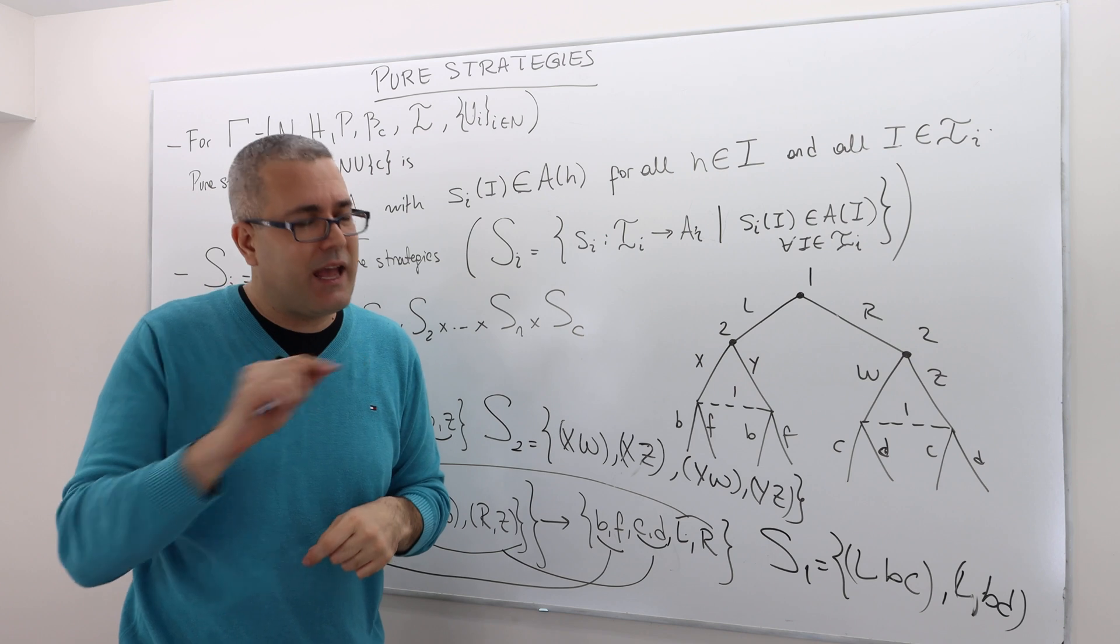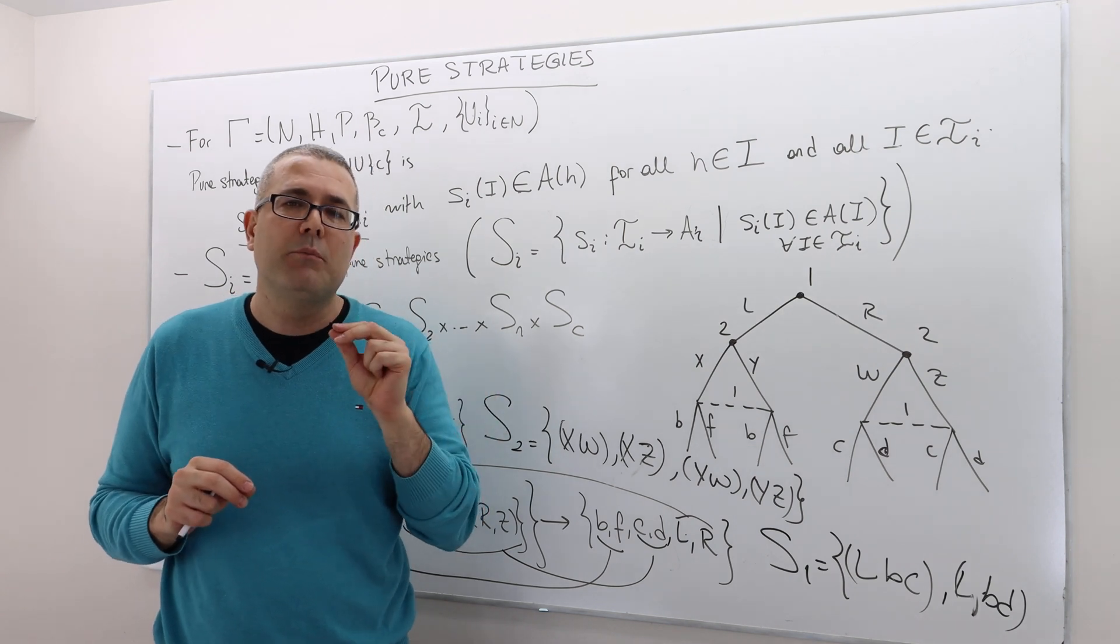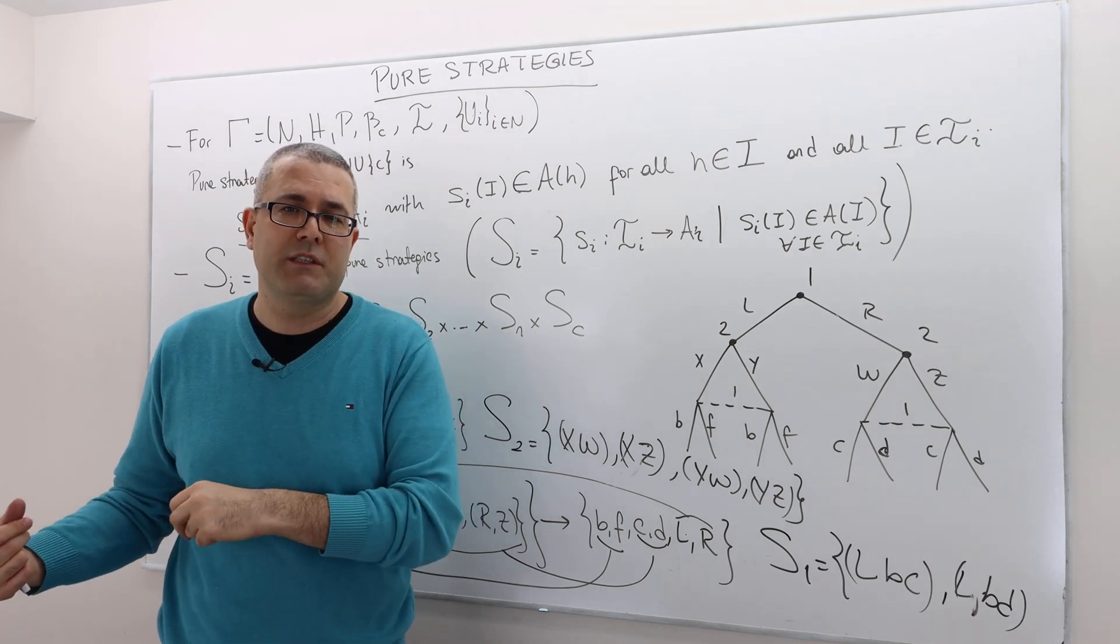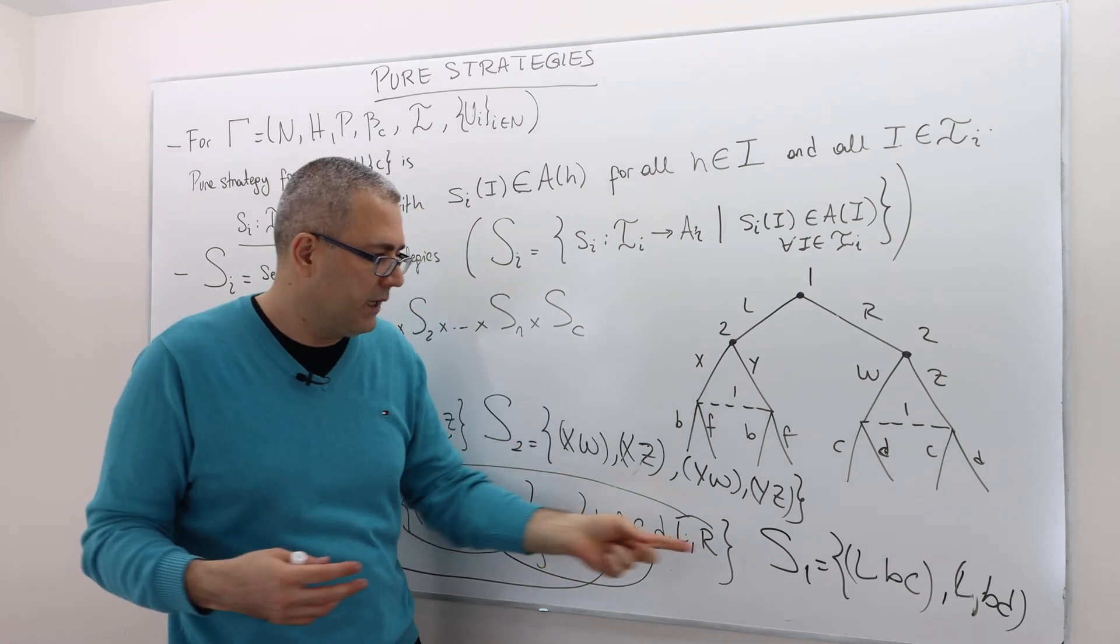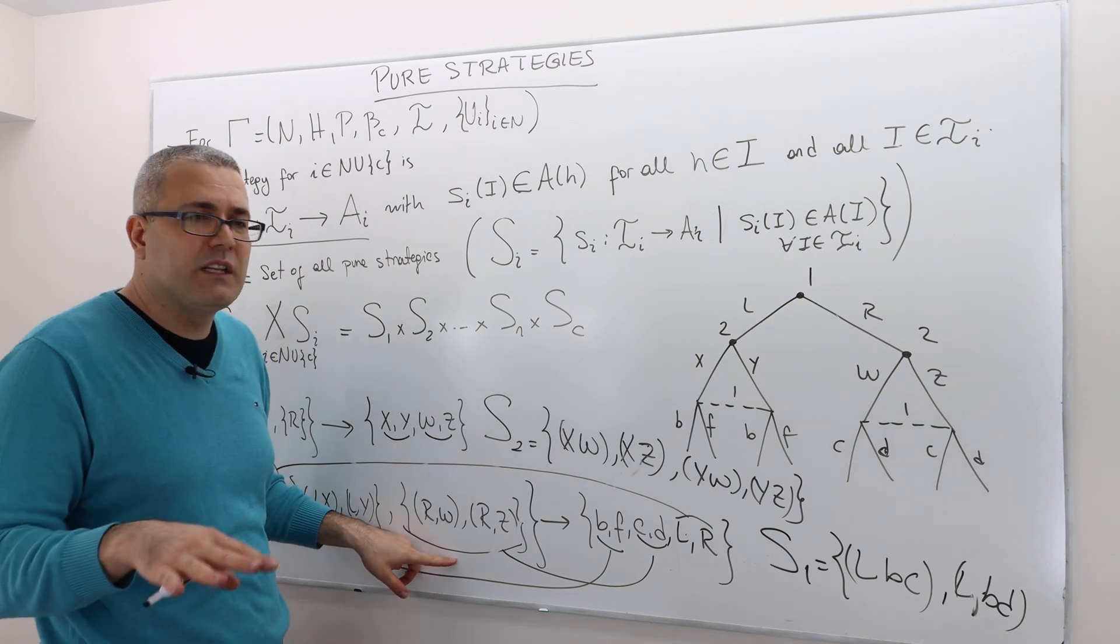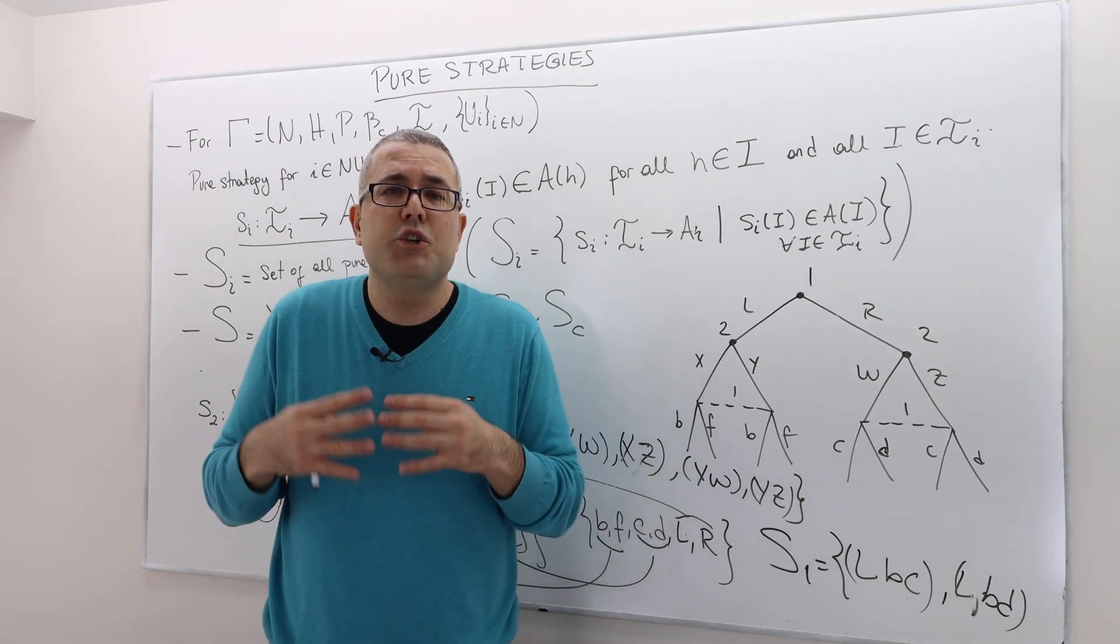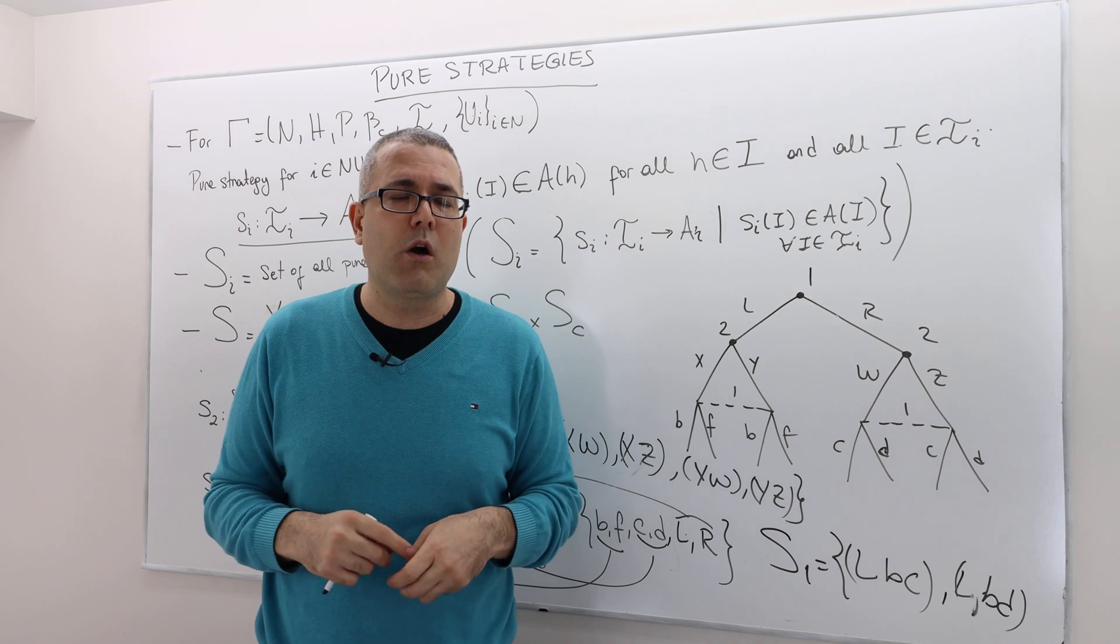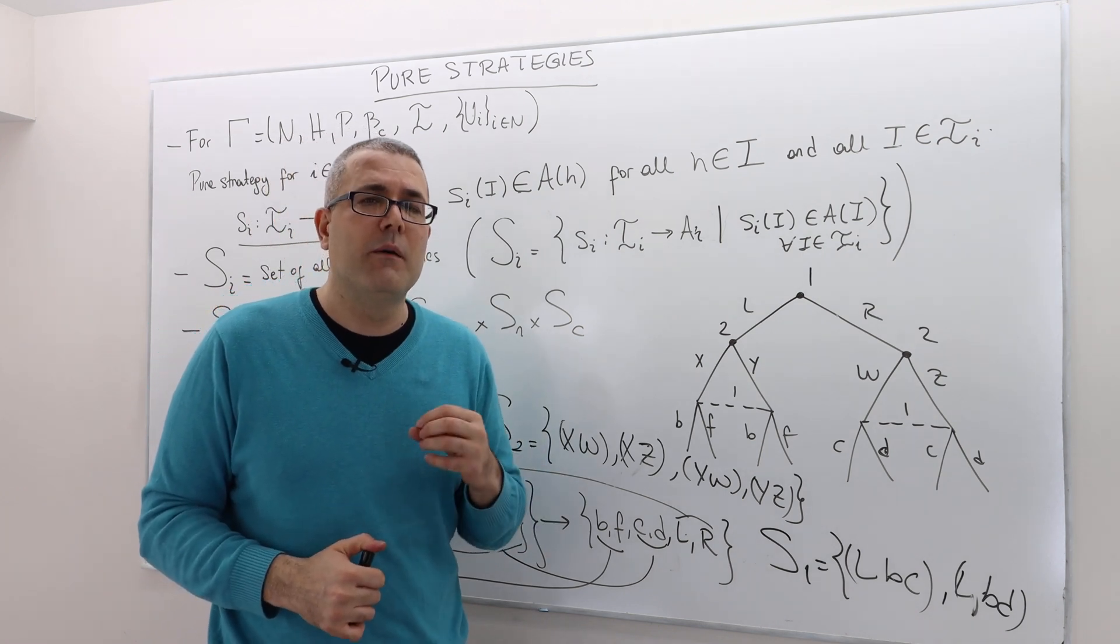Oh, before I finish, let me again just underline that. The strategies are going to specify what action players are going to play after every information set they have, even though some of those information sets are redundant because of their earlier strategies, meaning here, for example, he's choosing left and so this information set becomes redundant and so specifying whether he plays C or D here makes no difference, but nevertheless, strategies should just tell us what he's going to do. As I said, mathematically, this is easier. Later, as we work on more complicated games, it is going to make our life, at least the calculations of equilibrium, much, much easier.